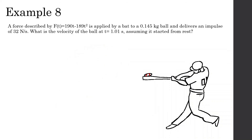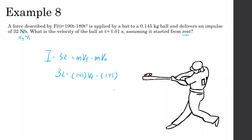A force F(t) = 190t − 189t² is applied to a bat for a 0.145 kg ball, with an impulse of 32 N·s (equivalently, 32 kg·m/s). What is the velocity of the ball at time 1.01 seconds, assuming it started from rest? Since impulse equals change in momentum: 32 = m·v_f − m·v_i = 0.145·v_f − 0.145 × 0. Dividing 32 by 0.145, we get a final velocity of approximately 220.7 m/s — definitely out of the park.